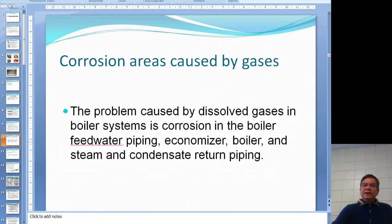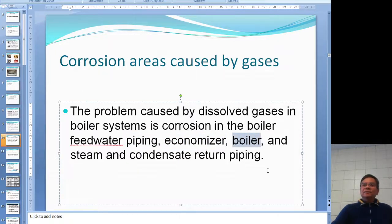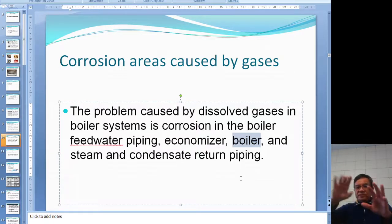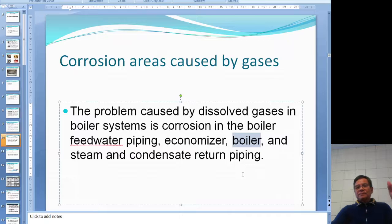Corrosion caused by dissolved gases affects different areas of the system. The feed water pipe and economizer are one category, where the temperature is not yet very high. Inside the boiler is another area. After steam leaves the boiler, the steam pipe must be considered. And when the steam condenses, the condensate return pipe is yet another category requiring different treatment.